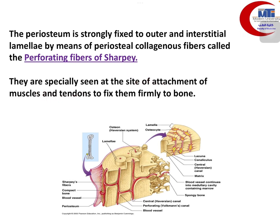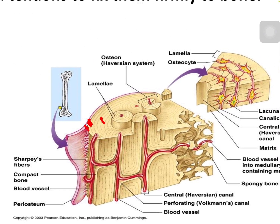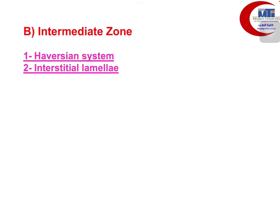At sites of attachment of muscles and tendons, perforating fibers of Sharpey arise. These perforating fibers attach the periosteum to the outer circumferential lamellae and additionally to the interstitial lamellae deep in the intermediate zone. This helps fix the attachment of muscles and tendons to the periosteum and to the deeper layers of the bone tissue itself.